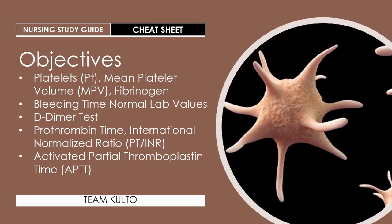Physicians order coagulation studies such as platelet count, activated partial thromboplastin time, prothrombin time, international normalized ratio, bleeding time, and D-dimer to evaluate the clotting function of an individual. In this section, we will discuss the indications and nursing implications of each lab test. Here are our objectives for today's discussion — we're going to cover platelets, PT, mean platelet volume (MPV), fibrinogen, bleeding time, D-dimer, prothrombin time, international normalized ratio (PT-INR), and activated partial thromboplastin time (APTT).